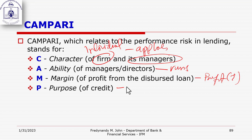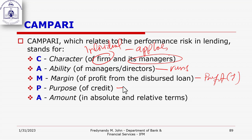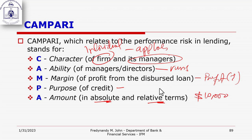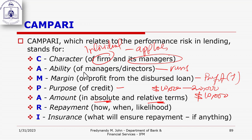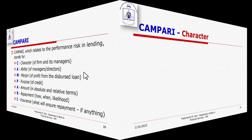Purpose: you need to be sure whether the purpose is acceptable by bank policy as well as the laws of the country — if not, decline the proposition. For amount, it needs to be in absolute terms, not relative: 'how much do you need? I need USD 10,000' — be specific. For repayment, establish how and when repayment will be done. Insurance is all about security or collateral for the loan.